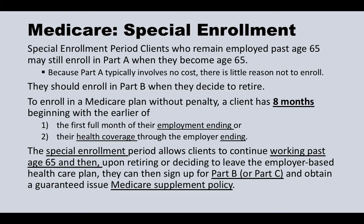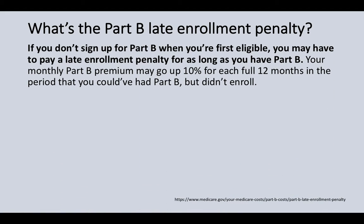If you continue working beyond age 65, when you stop working you have an eight-month window to enroll in Part B or Part C. If you do not enroll within that eight-month window, there will be a 10% penalty for each full 12-month period you were eligible but did not enroll in Part B. This Part B late enrollment penalty is permanent — it stays with you for the rest of your retirement as long as you have Part B.